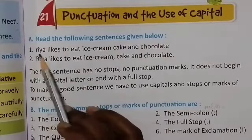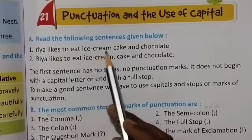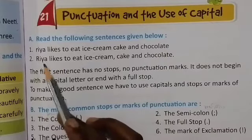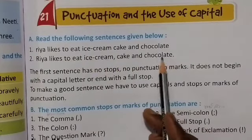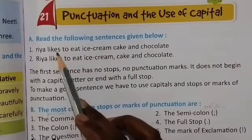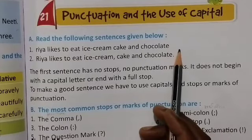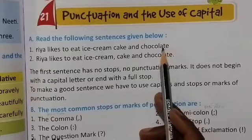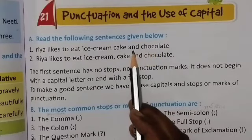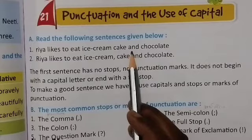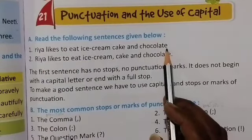The first sentence: 'ria likes to eat ice cream cake and chocolate.' Now, students, look here — this first sentence has no stops, no punctuation marks, and no stops. It does not begin with a capital letter or end with a full stop. So what is the correct sentence?